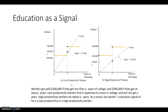Let's talk about how the signaling model for human capital works. In these graphs, you see a company has set up a wage structure where they want to pay low ability or low productivity workers $200,000, and they want to pay high productivity workers $300,000. Since you can't always tell whether someone is high or low productivity before hiring them, they'd like to use education as a signal of how productive a particular job candidate is.